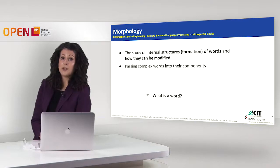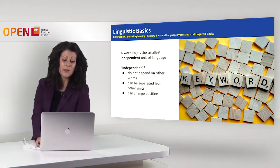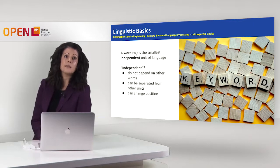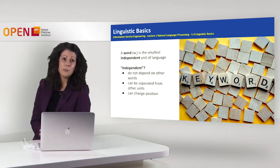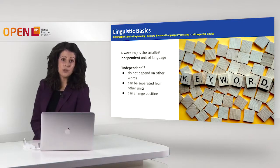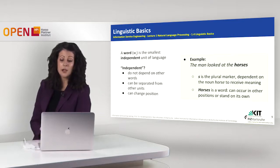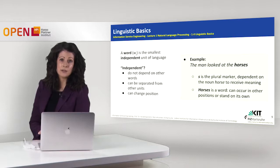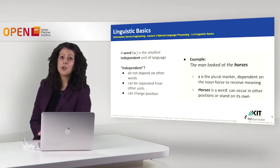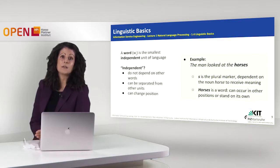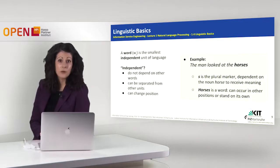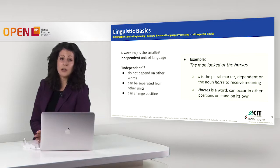What is important here to keep is the question: what is a word actually? We keep talking about words in this lecture, but is there a formal definition of what a word is? The answer is yes. A word is the smallest independent unit of language. Independent means that it is not dependent on other words, it can be separated from other units, and can change position while keeping its meaning. For example, in the sentence 'the man looked at the horses,' the character S at the end of horses is a plural marker that depends on the word 'horses' to receive a meaning and cannot stand alone in a sentence. The unit 'horses,' on the other hand, is a word since it can occur in other positions or stand alone and keep its own meaning.